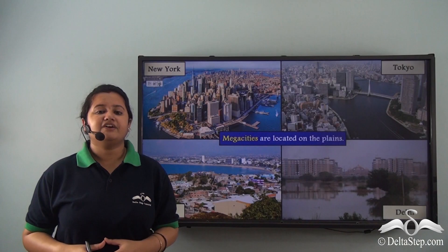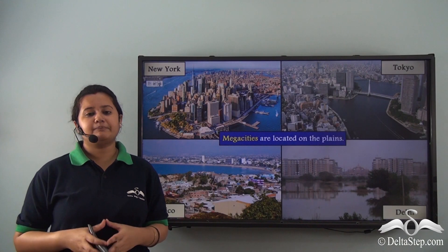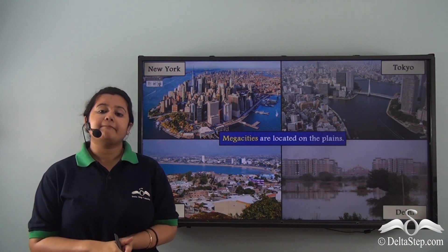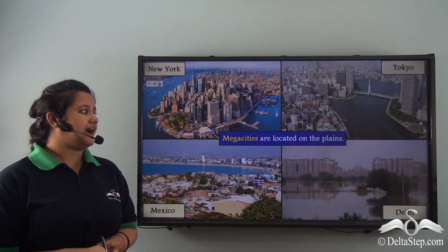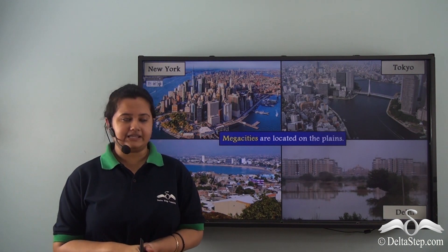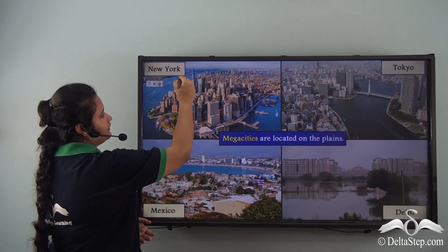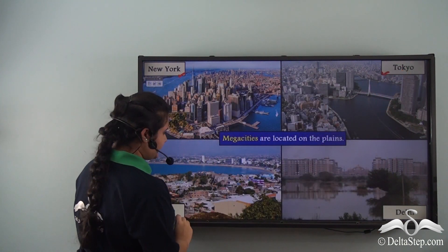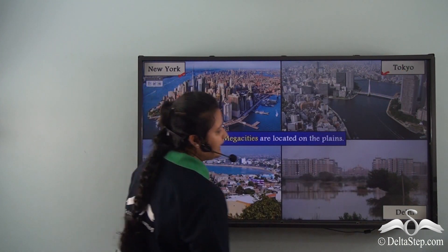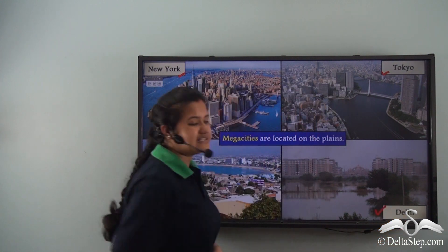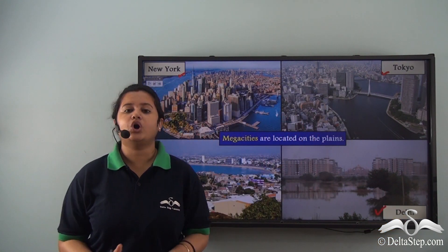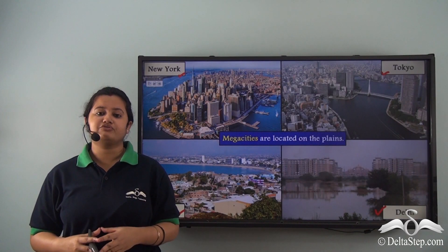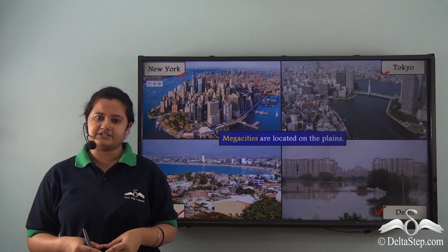Since plains are thickly populated, the mega cities of the world have developed on plains — like New York, Tokyo, Mexico, and Delhi. All these mega cities are located on plains. Thus we can conclude that plains are very important for the development of human civilization.